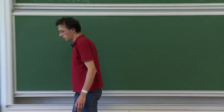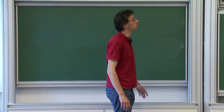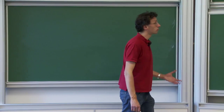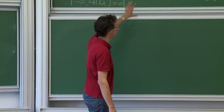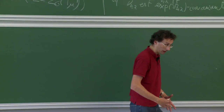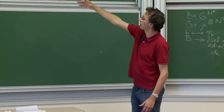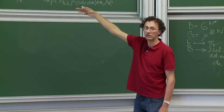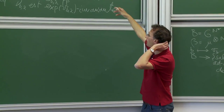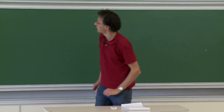J'ai commencé par donner des préliminaires qui sont purement théorie de la mesure. La démonstration s'appuie sur une construction très théorie de la mesure où on utilise peu la structure de l'espace homogène. On montre des propriétés d'équidistribution abstraites dans des espaces mesurés, et au dernier moment on rentre ça dans le cas où G est un groupe de Lie. Il faut d'abord vous expliquer des choses sur la théorie de la mesure.